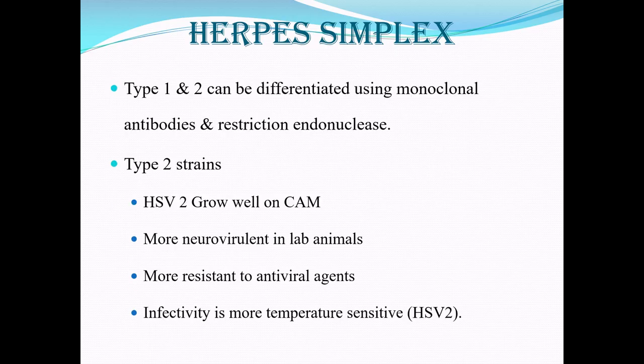HSV1 and HSV2 can be differentiated based on monoclonal antibodies as well as restriction endonucleases. The type 2 strains grow well on the chorioallantoic membrane, and with animal inoculation there will be more effect on the central nervous system — what is called neurovirulence. These are very resistant to antiviral agents, and infectivity is related to temperature, so as temperature fluctuates, there can be a drop or gain in infectivity.